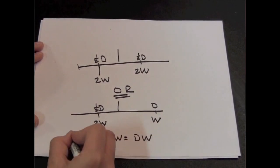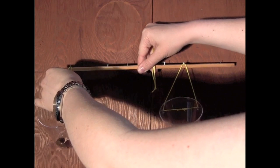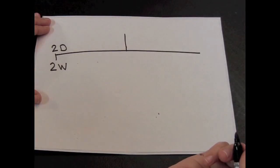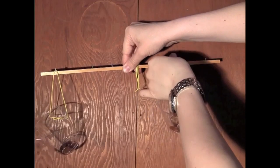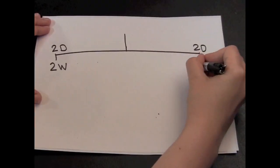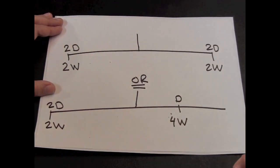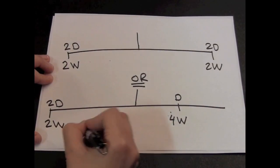But what if we move the left-hand cup farther from the middle to 2D and leave its weight at 2W? One way of balancing it is to move the right-hand cup farther out as well. Or we could move the right-hand cup back to D and increase its weight to 4W.